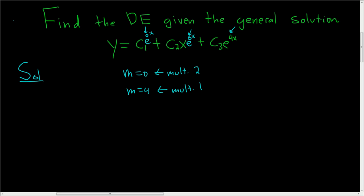And so all we do now is write the characteristic equation. Because m equals 0 is a root of multiplicity 2, that means that m minus 0 squared is a factor of the characteristic equation. And then here it's multiplicity 1, so it's simply m minus 4.